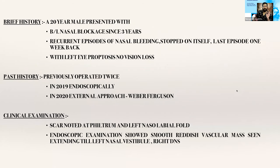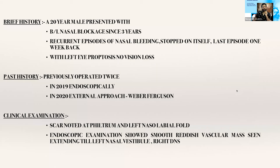A 20-year-old male presented with nasal block for three years and recurrent episodes of nasal bleeding that stopped on its own. Unprovoked epistaxis in a young adolescent male is taken as JNA until otherwise proven. The patient also had left eye proptosis — massive proptosis — and had been previously operated twice: endoscopically in 2019, and an external approach with Weber-Ferguson in 2020.